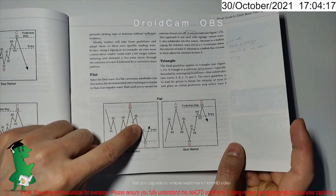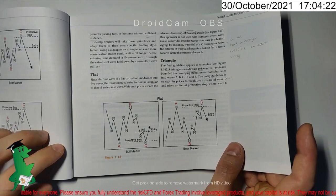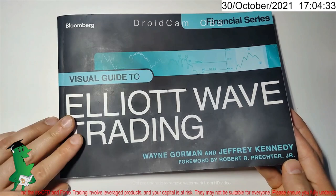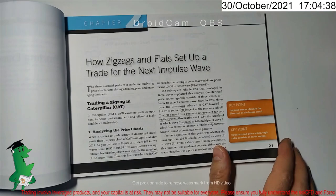The first chapter is all about trade setups. For example, if you have a flat, where should be your entry, where should be your stop-loss. If you follow my videos, I'm exactly copying the strategy I learned in this book for my analysis and trade setup. This is the reference if anyone wants to know how I set up my trades.